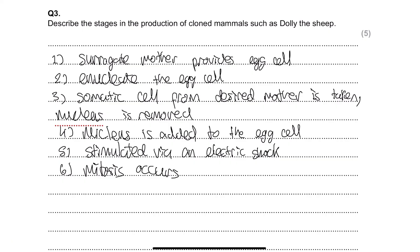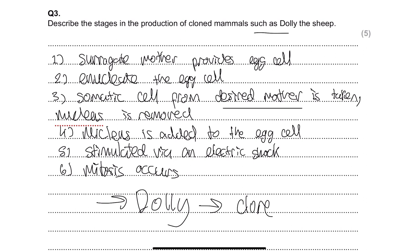Eventually you get a clone — don't say 'you get Dolly' in your answer since the question says 'such as Dolly the sheep.' You're getting a clone of the desired mother, not the surrogate mother. The surrogate mother is only there to provide the egg cell and to carry the embryo in her uterus. The clone is genetically identical to the individual whose somatic cell nucleus was used.